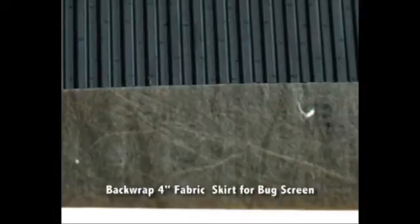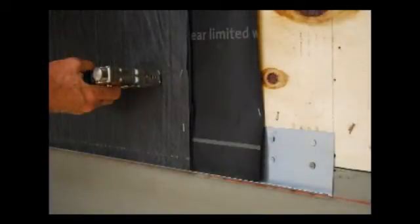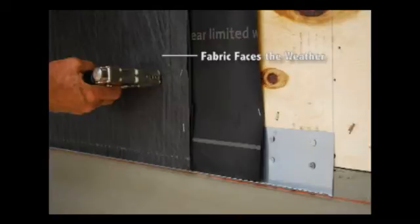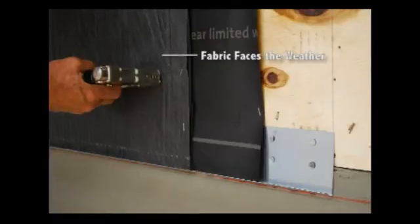Before applying the Sure Cavity to the wall, fold the 4-inch fabric skirt over the bottom edge of the Sure Cavity to act as a bug screen. Fasten the Sure Cavity to the wall with staples, making sure the Spunbond polypropylene fabric is facing the weather.